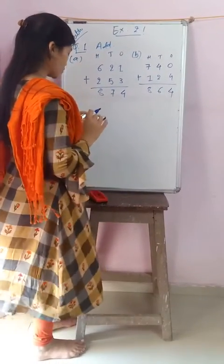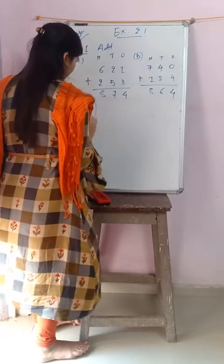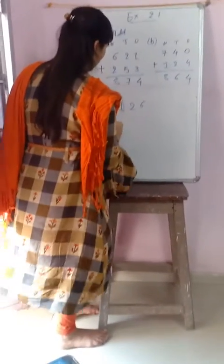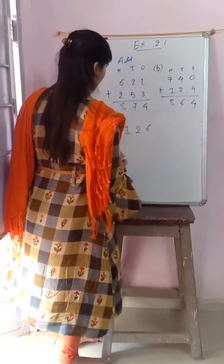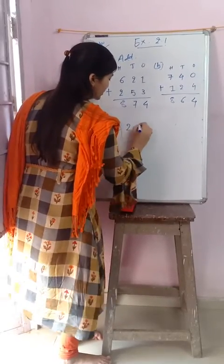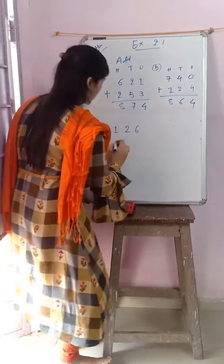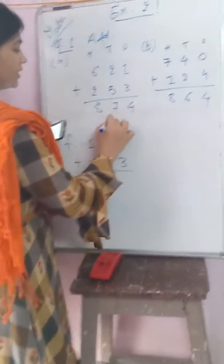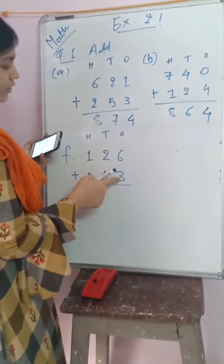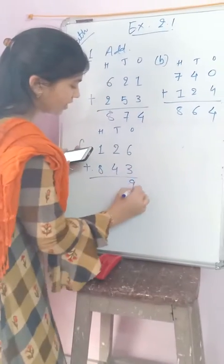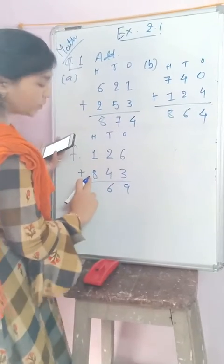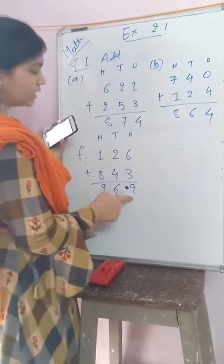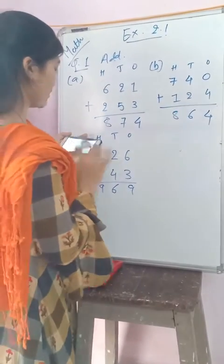Now I am solving f1: 126 plus 843. Ones, tens, and hundreds. Starting from the ones place: six plus three equals nine, two plus four equals six, one plus eight equals nine. The answer is 969.